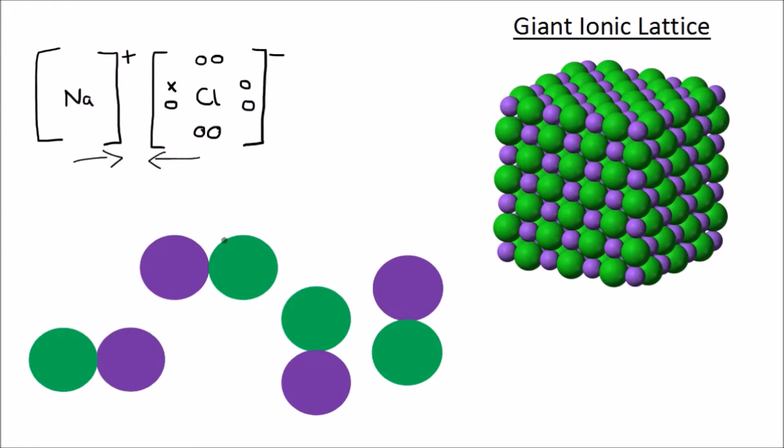So if we look at this sodium chloride molecule, the sodium ion won't just attract a single chlorine ion but it will actually attract many other chlorine ions and vice versa. So you end up with something that looks like this.